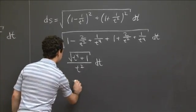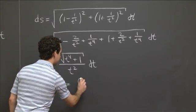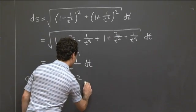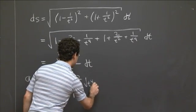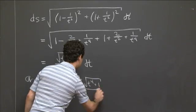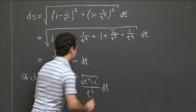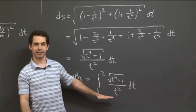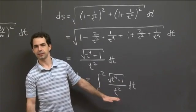So the arc length, we just integrate our little element of arc length over the appropriate interval. So that's t from 1 to 2 of the square root of (t⁴ + 1)/t² dt. All right, so as I said at the beginning, this is not an integral that's readily susceptible to the techniques that we've learned.